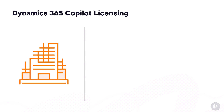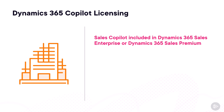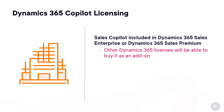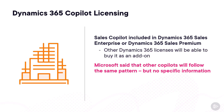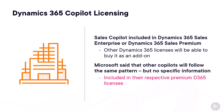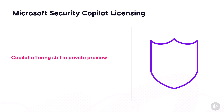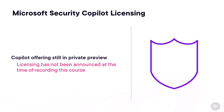For Dynamics 365 Copilot, Sales Copilot is included with Dynamics 365 Sales Enterprise or Dynamics 365 Sales Premium licenses. Other Dynamics 365 licenses can buy it as an add-on. For other Dynamics 365 Copilots, Microsoft indicated they would follow the same pattern — included in their respective premium Dynamics 365 licenses and available as an add-on for others. For Security Copilot, as it is still in private preview, licensing has not been announced yet, so make sure to check for updates.